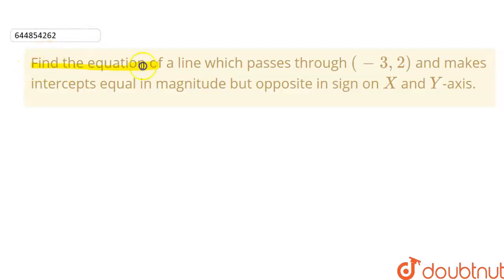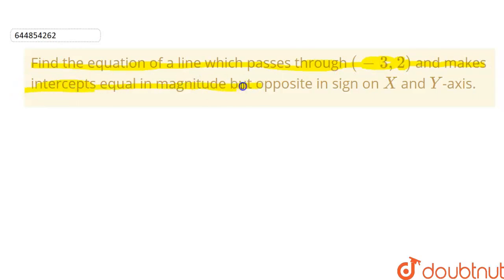Hello students. In this question we have to find the equation of a line which passes through minus 3 comma 2 and makes intercepts equal in magnitude but opposite in sign on the x and y axis. Before solving this question we need to know some concepts.